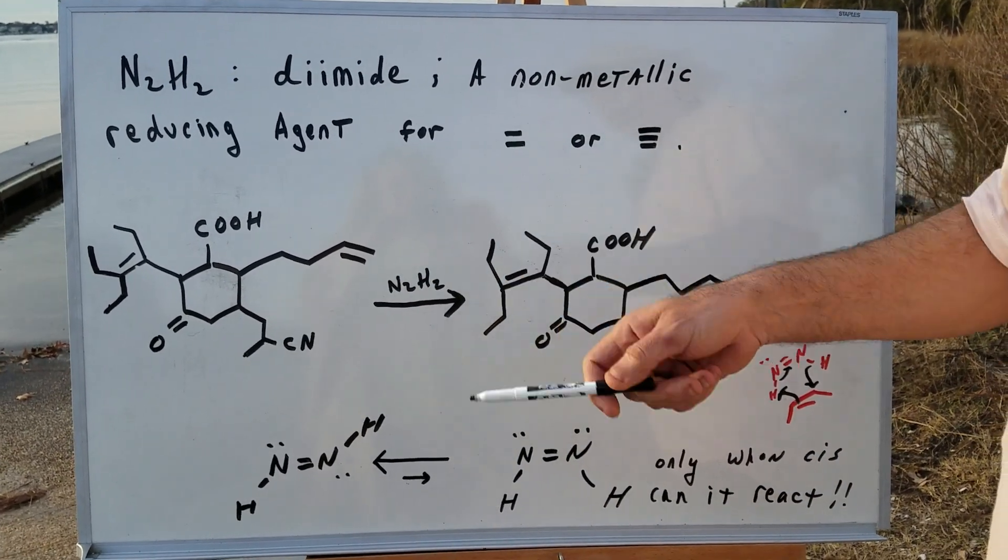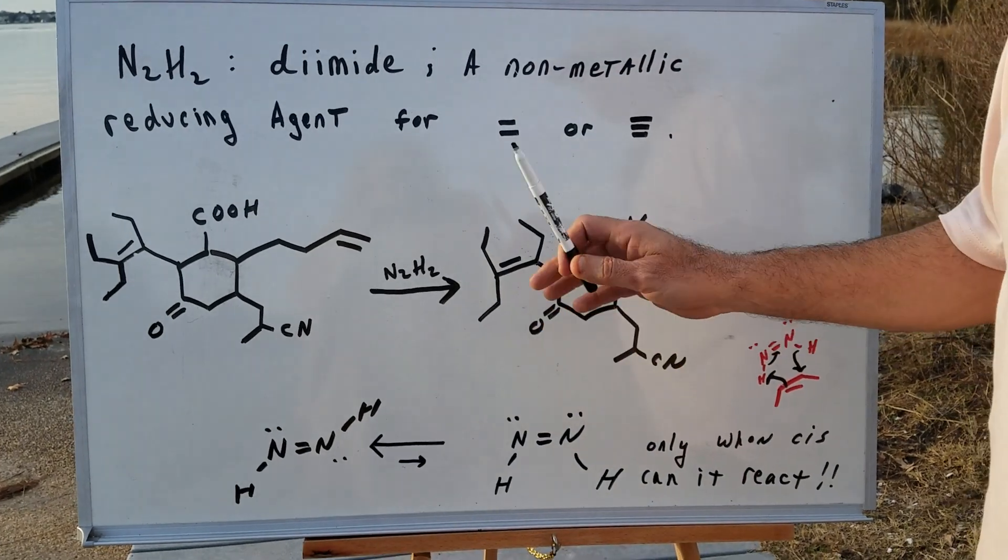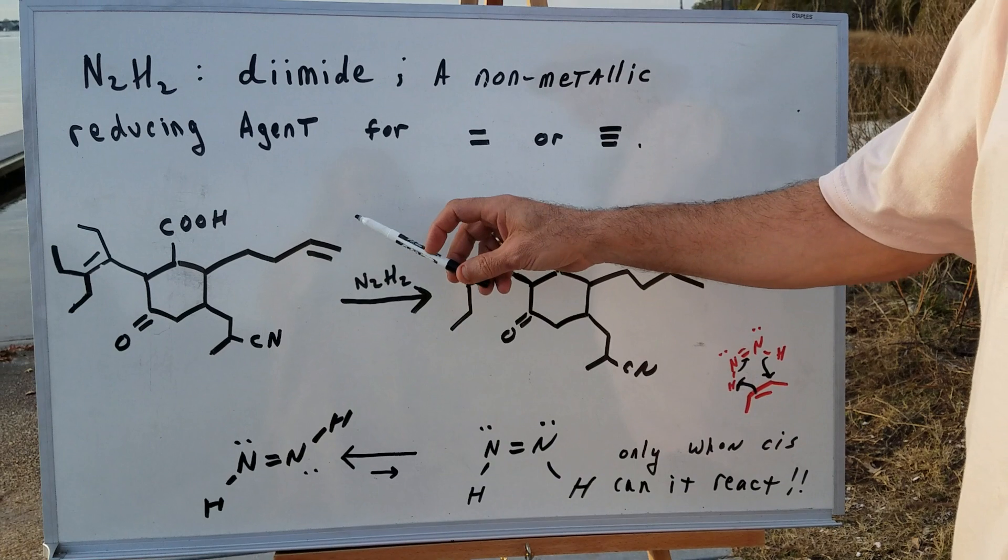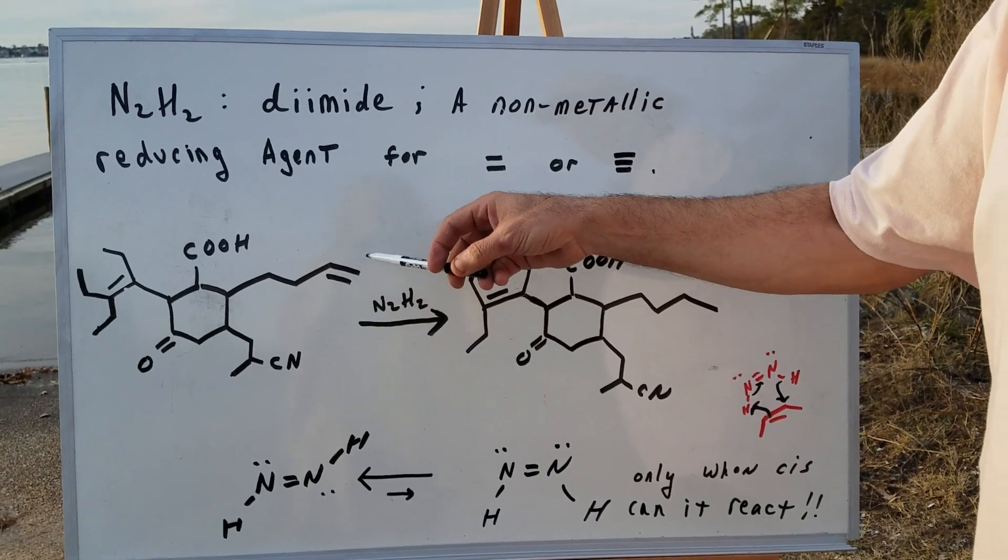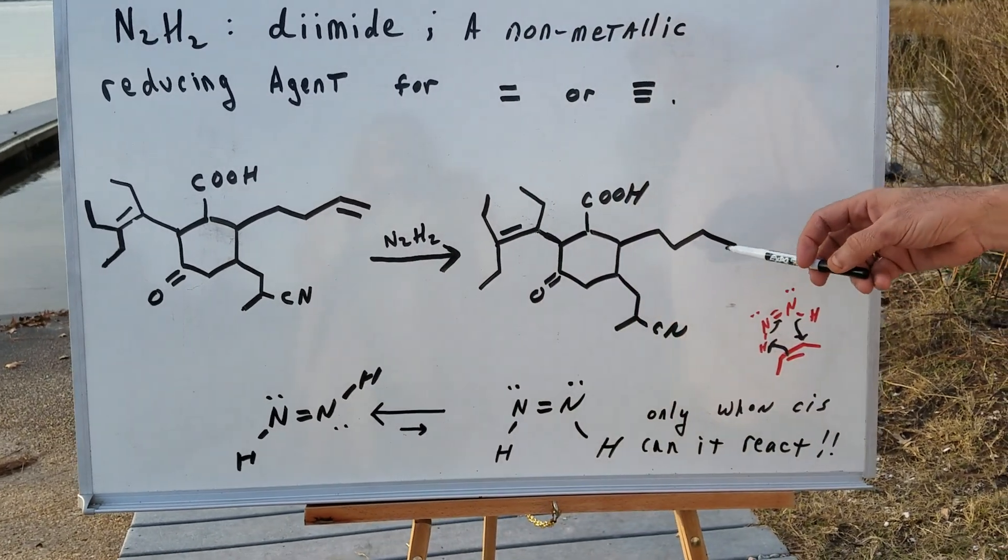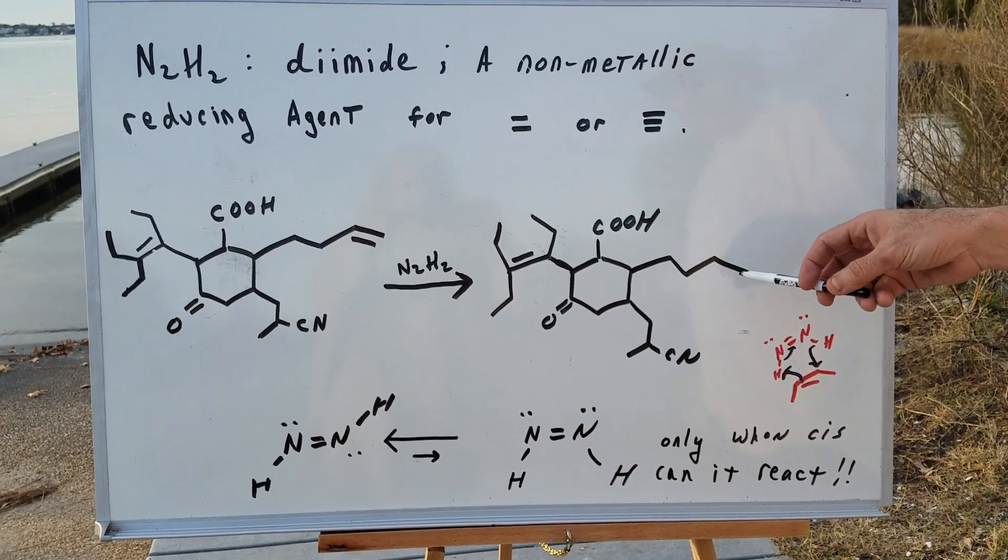Now, I treat this with diimide. Diimide is simply going to add two H's across a double bond. But it's going to go to the double bond that's easiest to access. And as you can see, the one on the end is going to be easiest. And notice, we reduce it down.